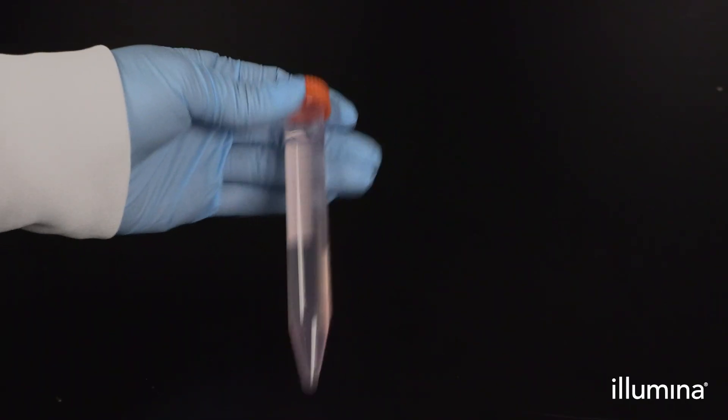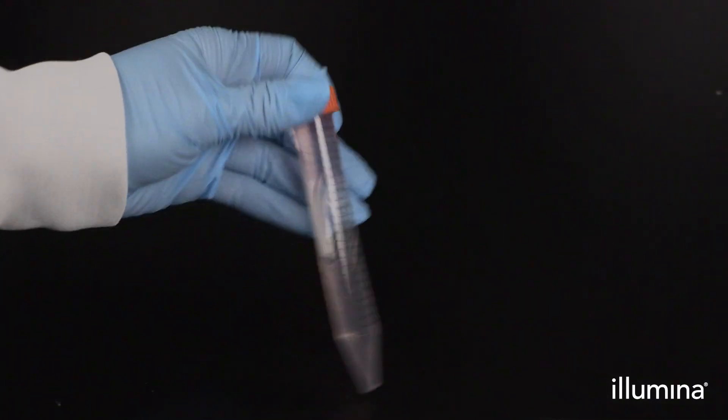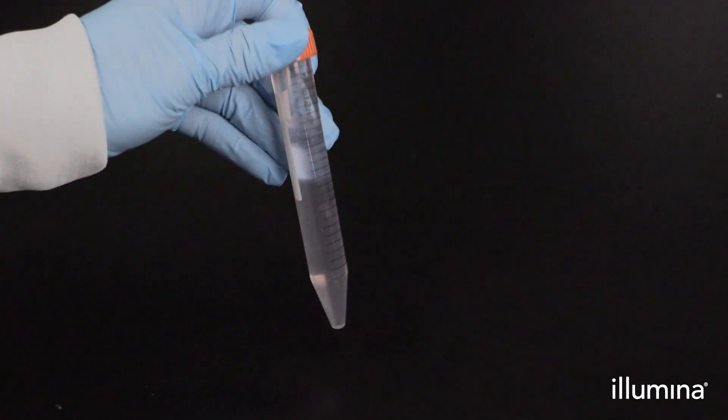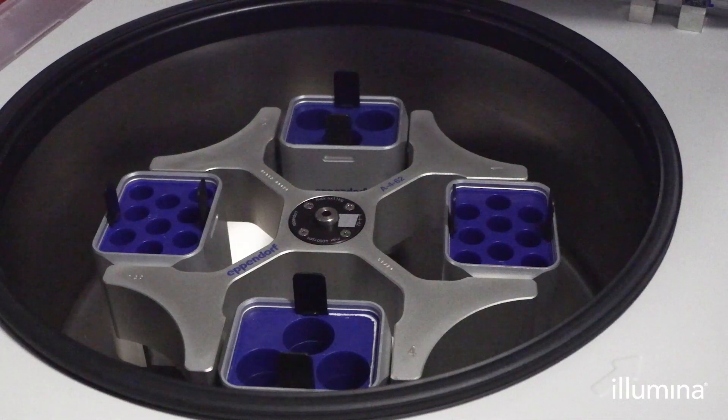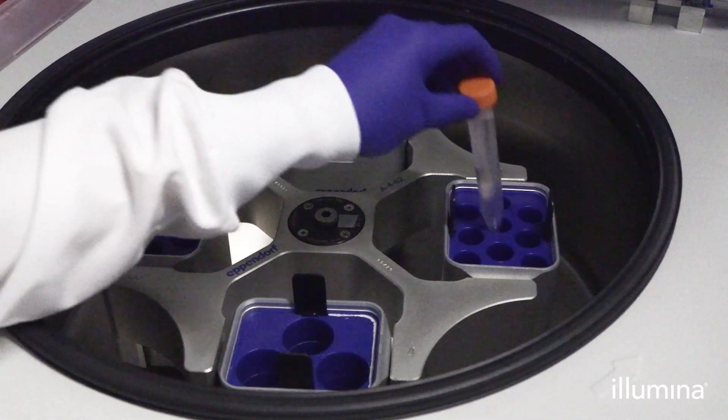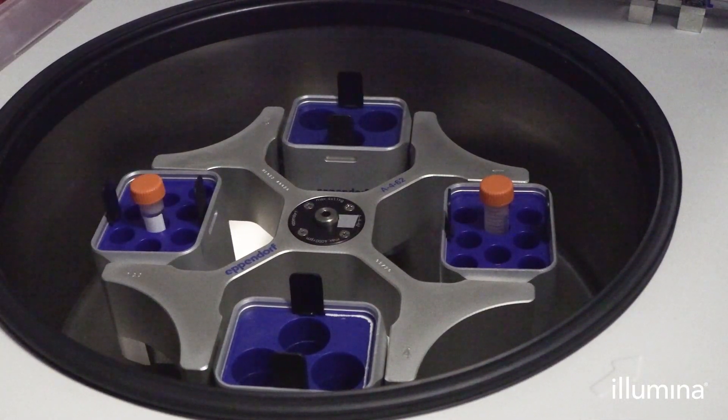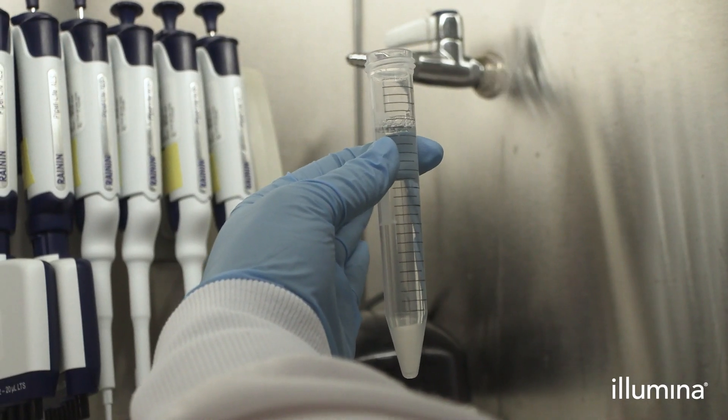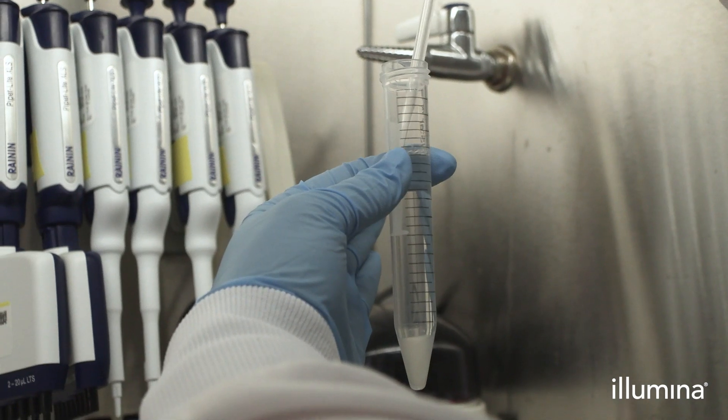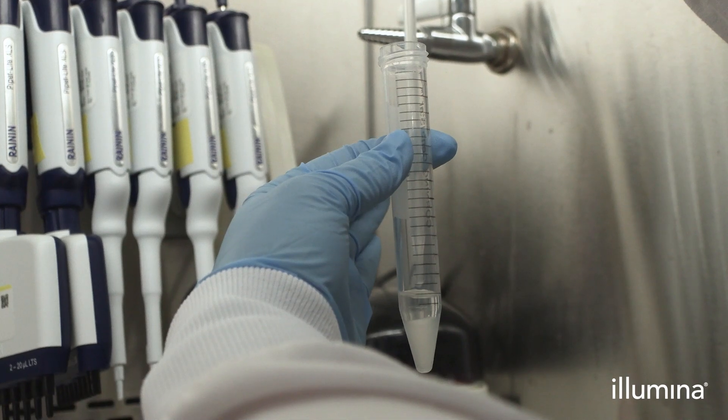Gently mix each tube by tapping or flicking the bottom to disperse the pellet and invert 10 times. Load the 15 ml tubes into a swinging bucket rotor centrifuge and spin for 2 minutes at 750 g. Be sure to have braking set for 70-80% of maximum to avoid disruption of the PIPs pellet. Remove supernatant until approximately 2 ml of washing buffer remains. Do not disturb the packed PIPs at the bottom of the tube.